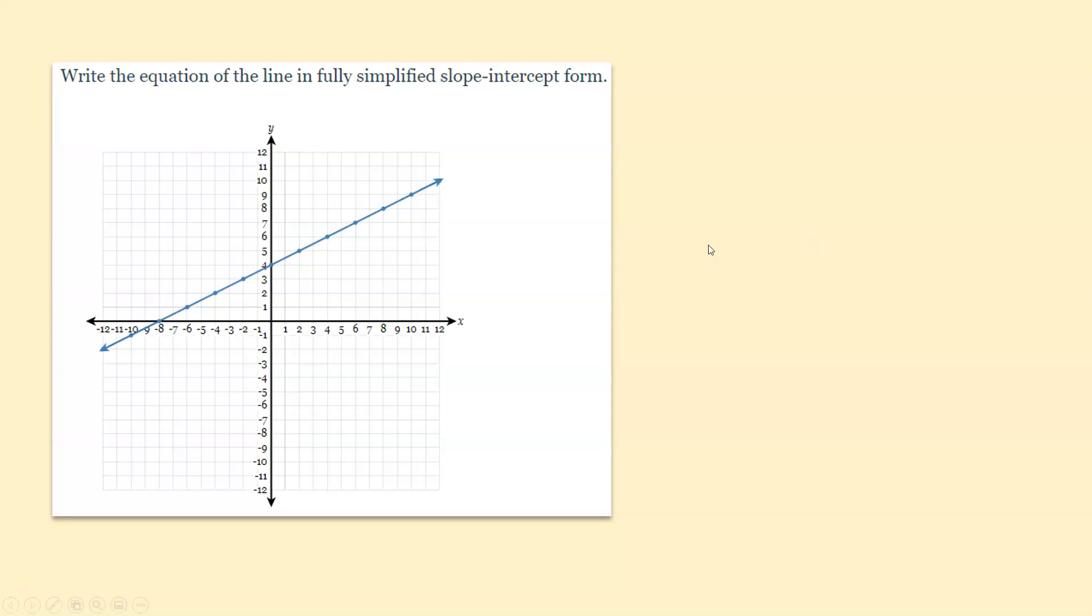So we also have this type of problem which is write the equation of the line in fully simplified slope intercept form. So for this what I would do is just individually identify what m is and also what b is. So to figure out what m is we want to look at the slope of the line. So we just have to pick out any two points.